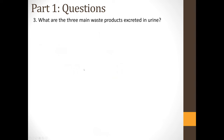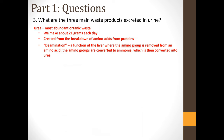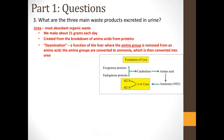Question 3: What are the three main waste products excreted in urine? The first is urea, the most abundant organic waste — we make about 21 grams of urea every day. Urea comes from the breakdown of amino acids, which come from the breakdown of proteins. Deamination is a liver function where the amino group is removed from an amino acid, converted to ammonia, and then ammonia is converted into urea, which goes back into the bloodstream and is filtered out by the kidney.